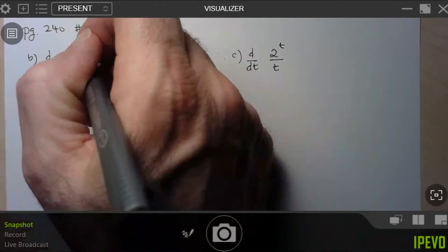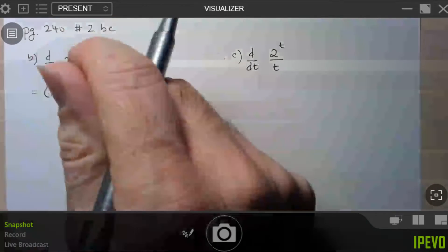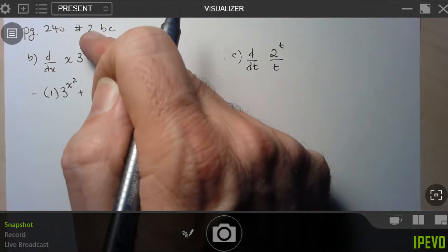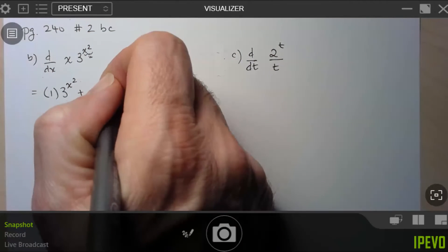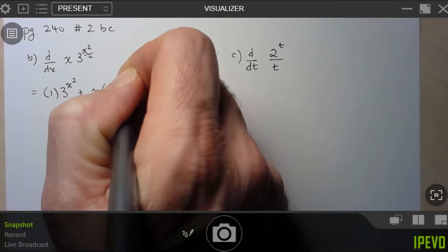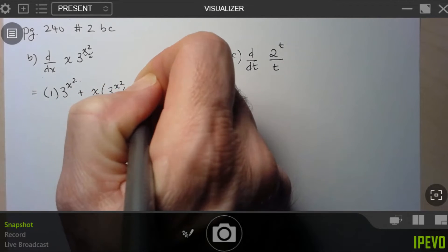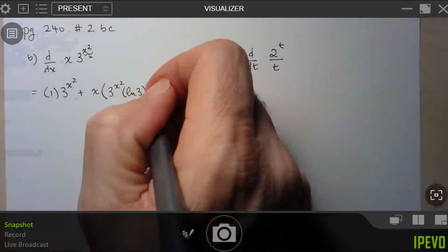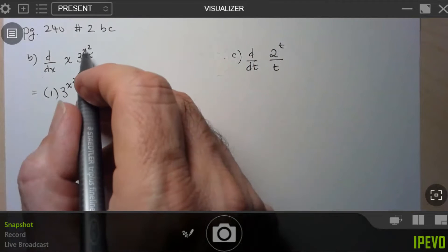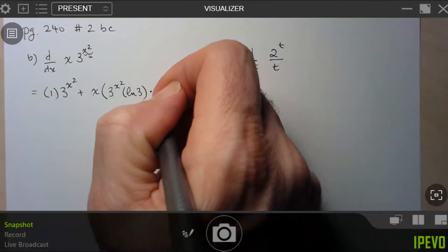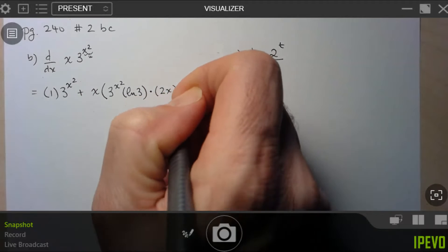So here, think of your x squared as your u. So what's the derivative of 3 to the u is just 3 to the u. So 3 to the x squared ln 3. And then I have to multiply that by the derivative of u with respect to x, which is 2x.